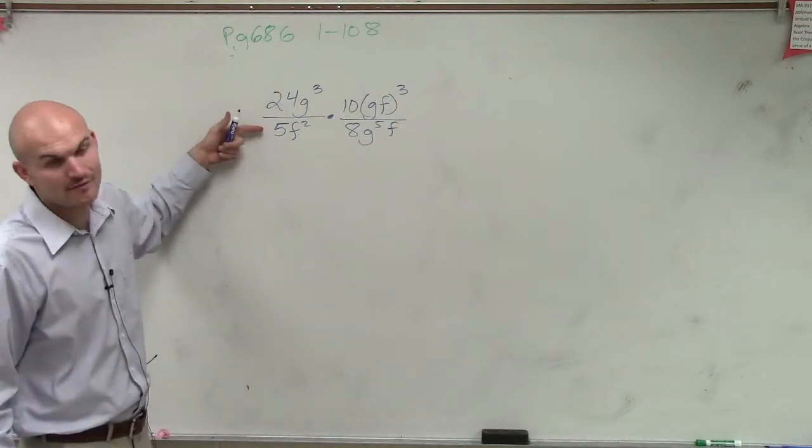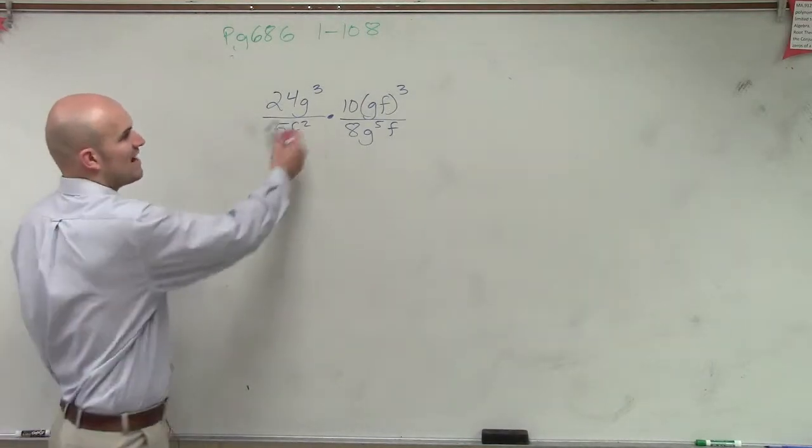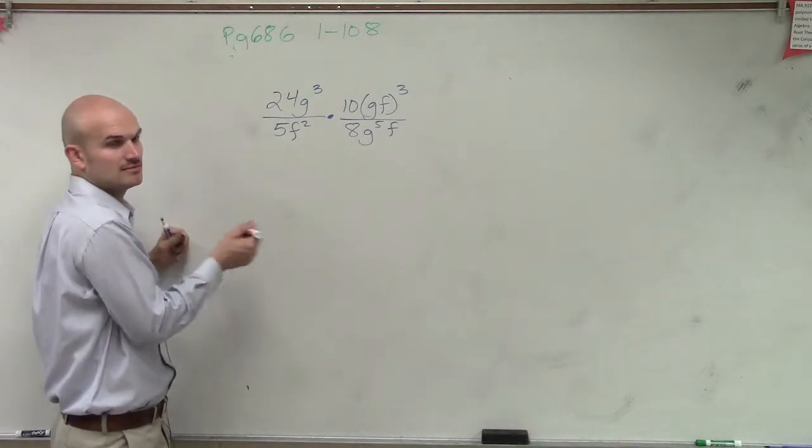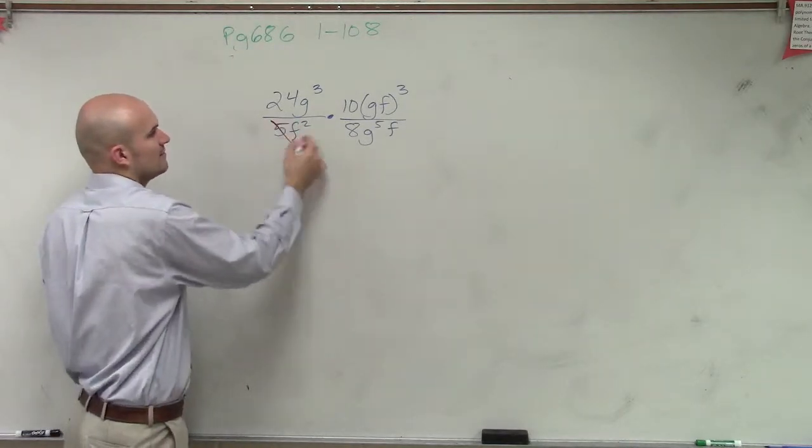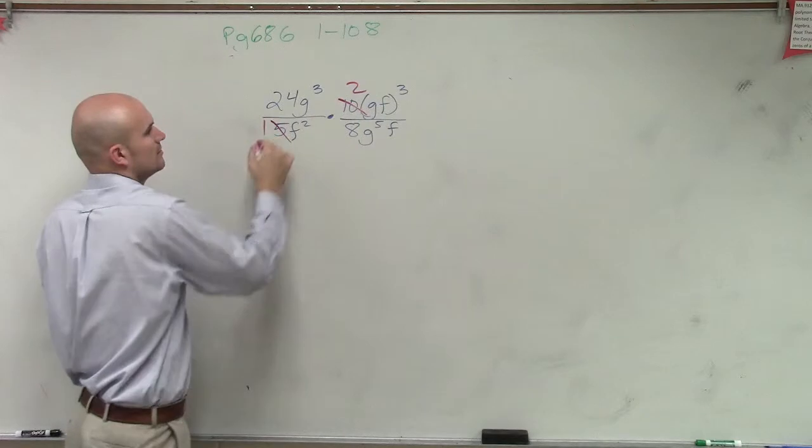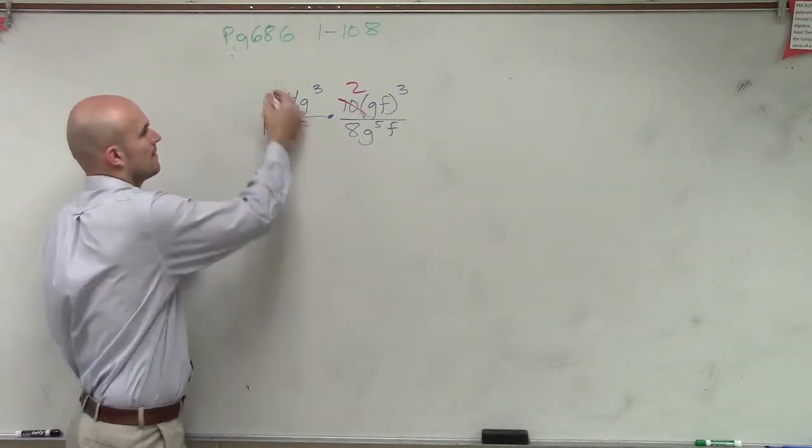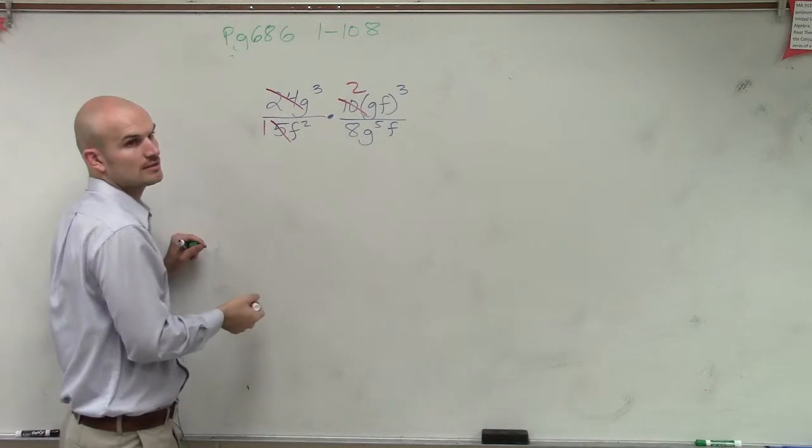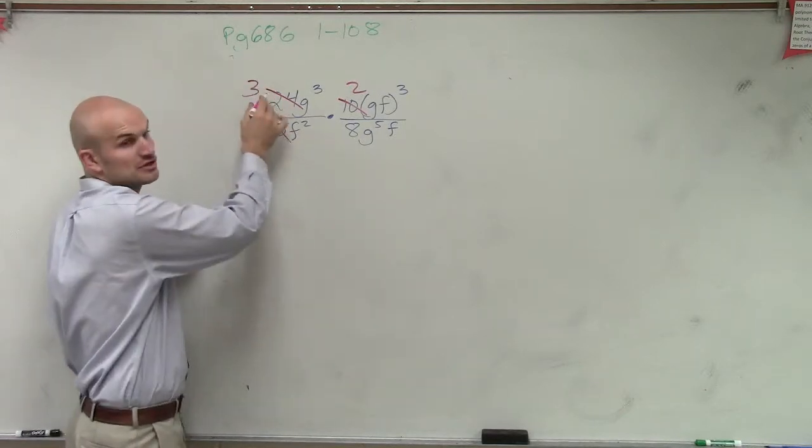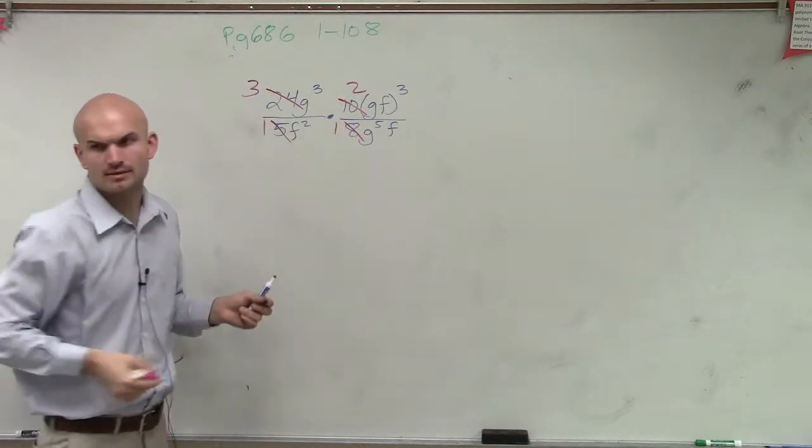Well, 24 over 5, that does not reduce, right? But 5 and 10, can we reduce that? Yeah, we can say 2 over 1, right? And 24 over 8, does that reduce? Yeah. What is it? 3 over 1, because that reduces to 3 and that would go to a 1, right? OK.